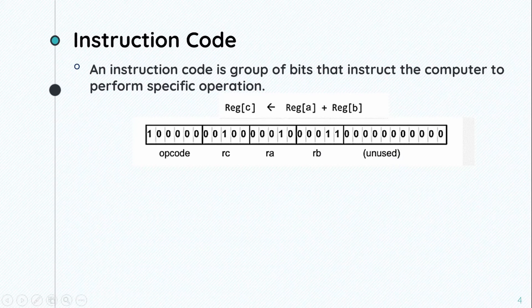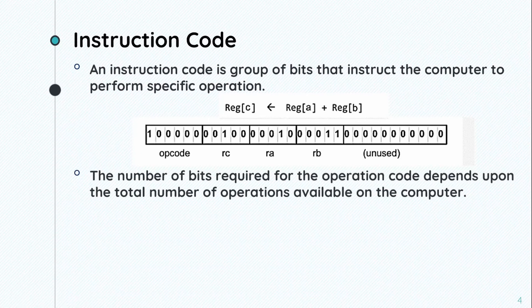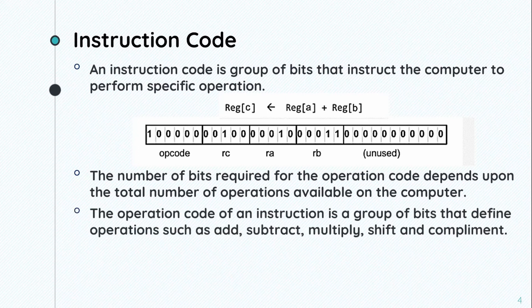The number of bits required for the operation code or opcode depends upon the total number of operations available on the computer. The instruction format depends on the computer organization, such as single accumulator CPU organization or general register organization.